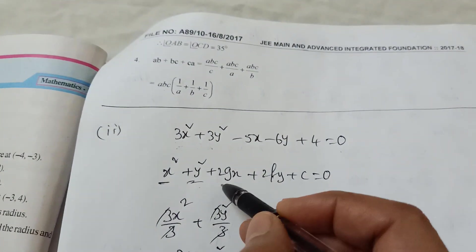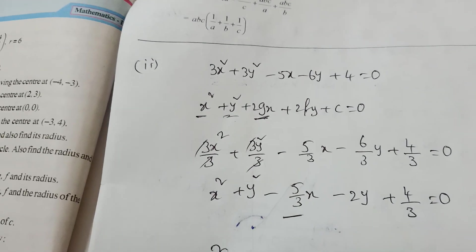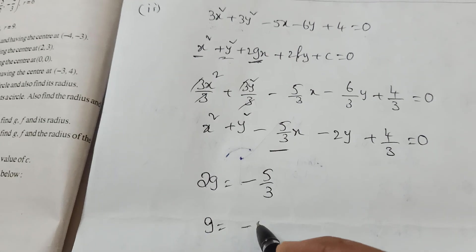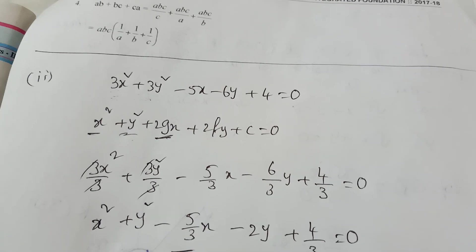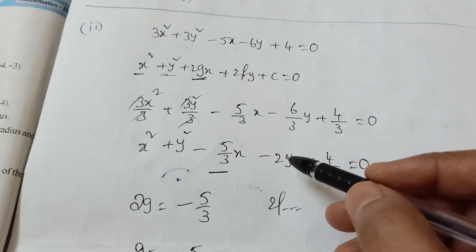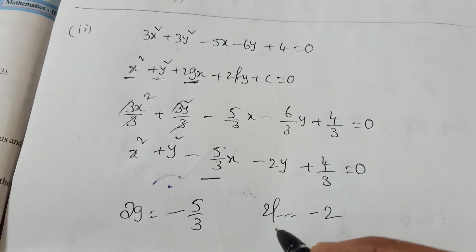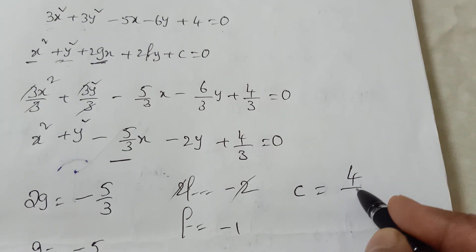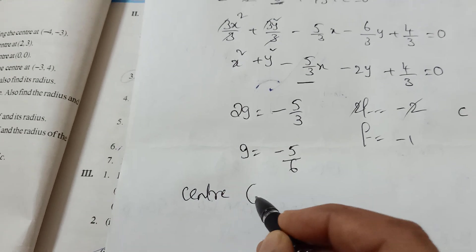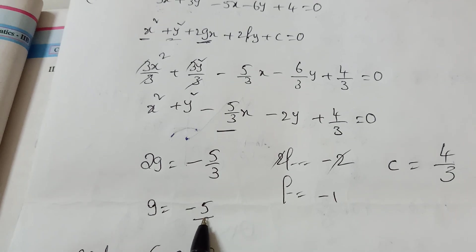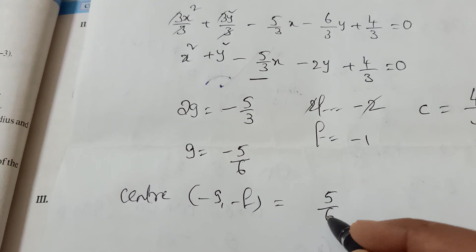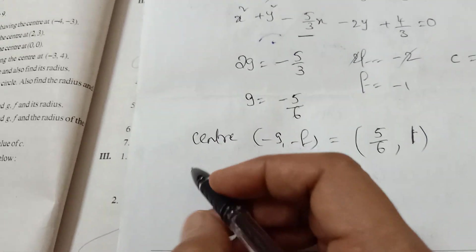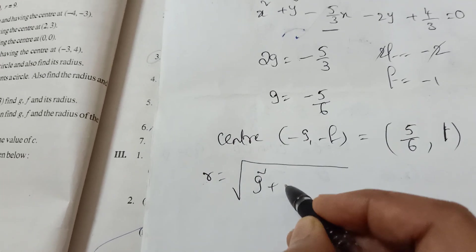Now compare with the general form. In the 2g position, we have minus 5 by 3. So 2g equals minus 5 by 3, giving g equals minus 5 by 6. For 2f, the y coefficient is minus 2, so 2f equals minus 2 and f equals minus 1. And c equals 4 by 3. Center equals minus g comma minus f equals 5 by 6 comma 1.